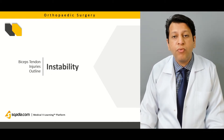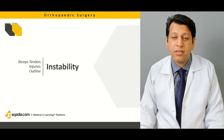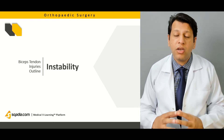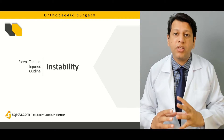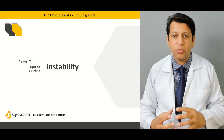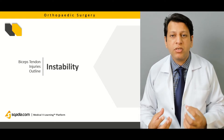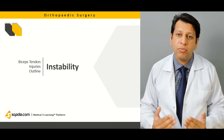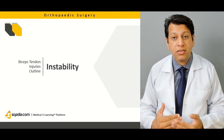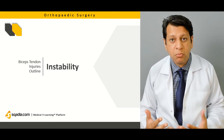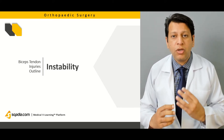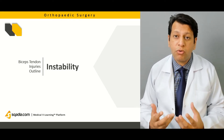Then we will be moving on to instability. As you know, the shoulder joint is an inherently unstable joint. There is a small glenoid which is attached with a large head — this is like a golf ball on a tee situation, where the ball is quite large and the tee on which it is placed is small. There is a labrum which gives extra depth to the glenoid, as well as a capsule, and there are static stabilizers such as the ligaments, capsule, and labrum which help to stabilize the shoulder joint.